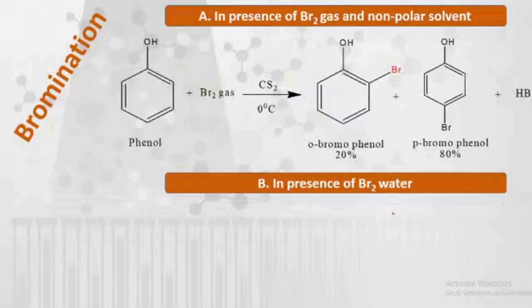Why does only monobromination take place here? Because we are using a nonpolar solvent, which does not polarize the molecule — no ionic character can be observed. Therefore, ionization of the OH group cannot take place, and the result is formation of monobromophenols.